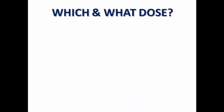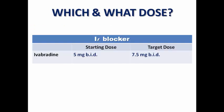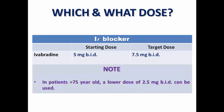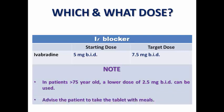The starting dose is 5 mg twice per day, reaching a target of 7.5 mg twice per day. Remember that in elderly patients over 75 years old you may need to start with a lower dose of 2.5 mg twice per day. Advise the patient to take ivabradine with meals because this increases the bioavailability and absorption of the medication.